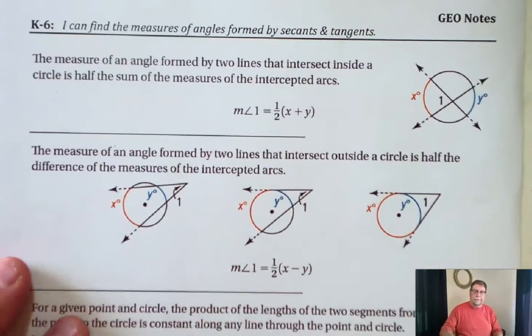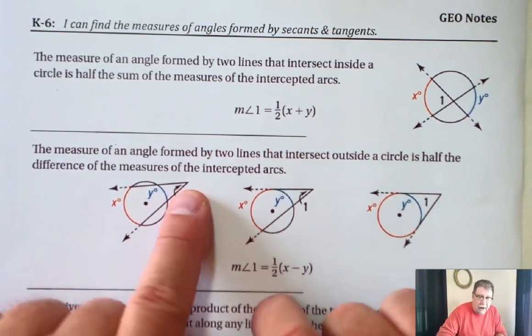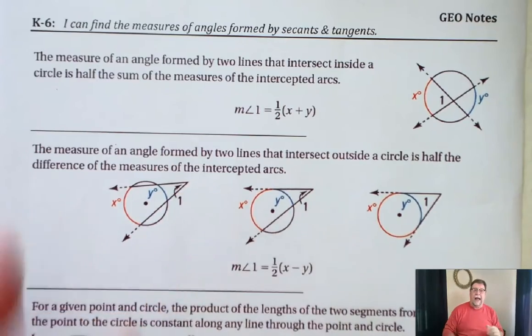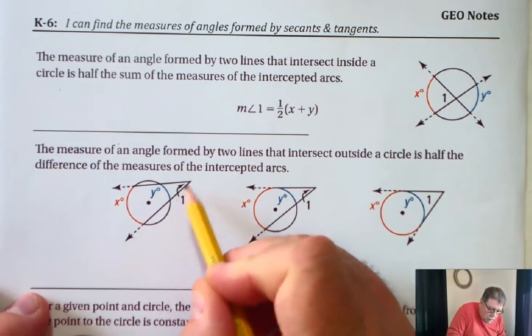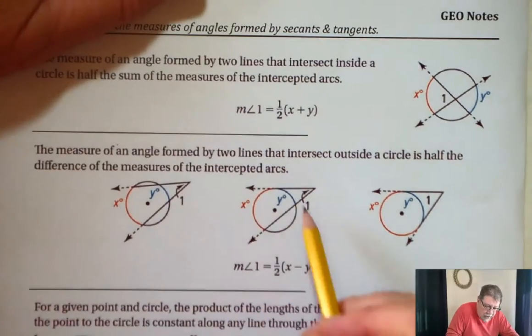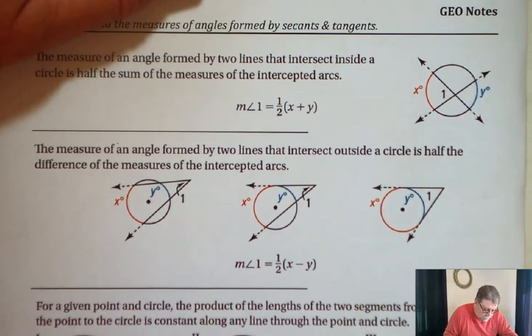The second one, this time they're intersecting outside the circle. So we basically have an angle that's outside the circle, but it goes through the circle. Both sides go through the circle. They're either tangent to or they go through the circle.